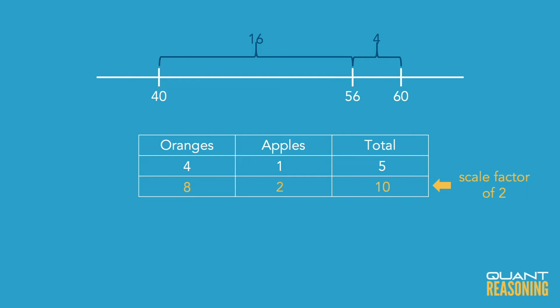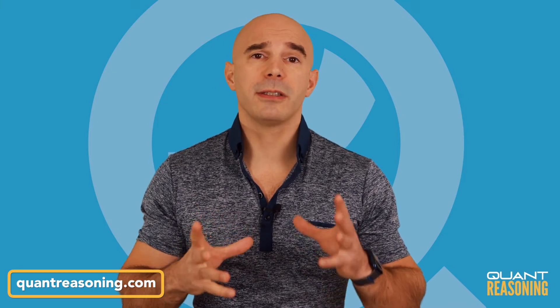It's important to make that inference halfway through the question. We don't actually want to read all the way to the question mark. We first want to make this inference so we know there were exactly 8 oranges and 2 apples. Now I'm ready to keep reading.